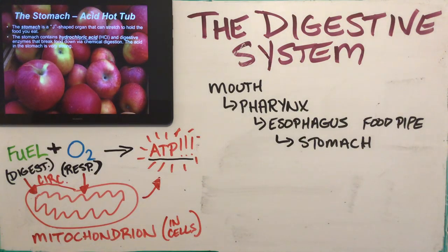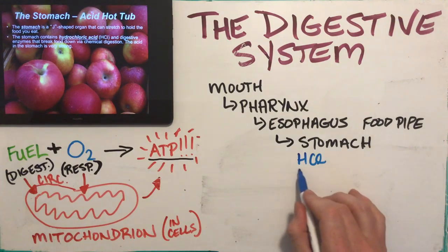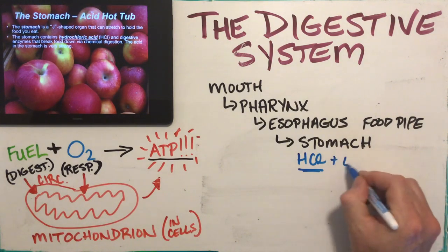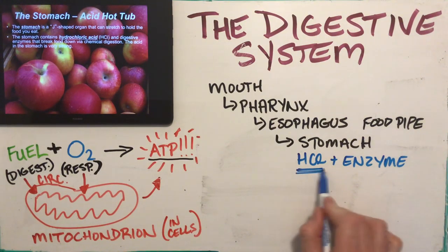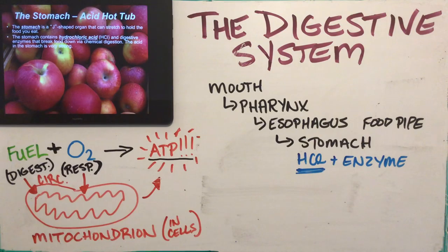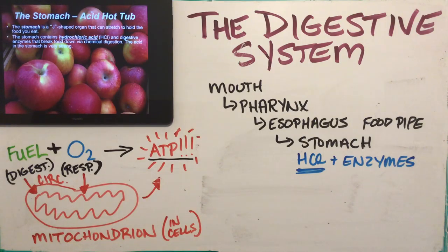Hydrochloric acid breaks down all types of food molecules — acid breaks down organic matter significantly. The HCl in our stomach is very strong; if you took it out and purified it, its pH would be around 1 or even lower. That's a very strong acid if you remember the pH scale from Grade 10. There are also enzymes in the stomach that help break down food via chemical digestion.